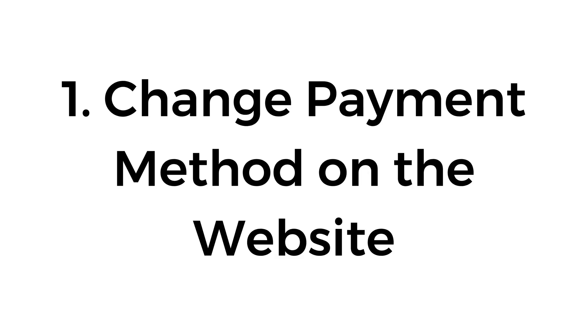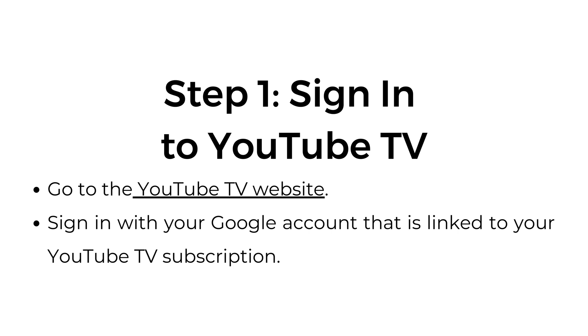Number one: change payment method on the website. Step number one, sign in to YouTube TV. Go to the YouTube TV website and sign in with your Google account that is linked to your YouTube TV subscription.